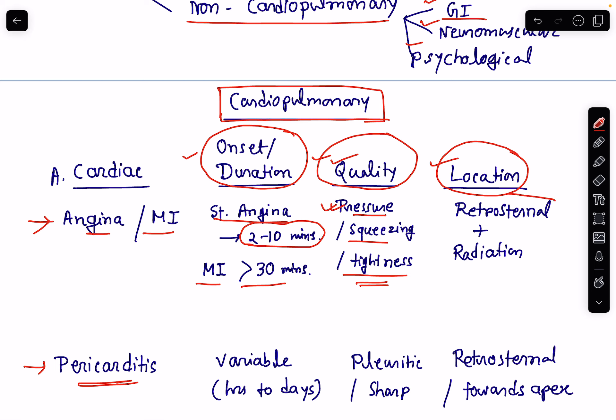The location is typically retrosternal. The pain of angina or MI radiates — the radiation is usually towards the neck, then the jaw, then the arms, and maybe to the upper back and shoulder. These are the sites of radiation.